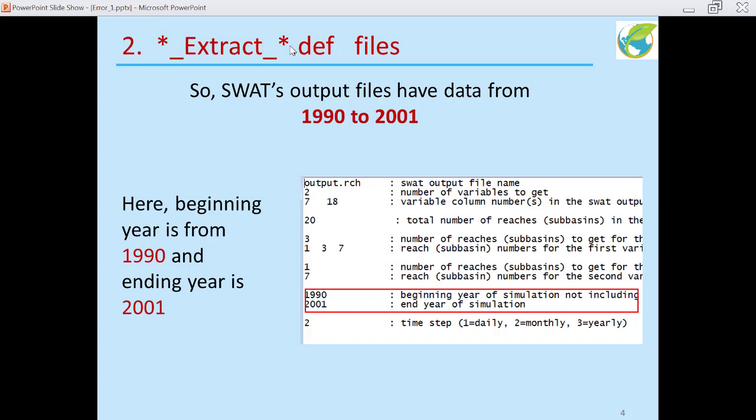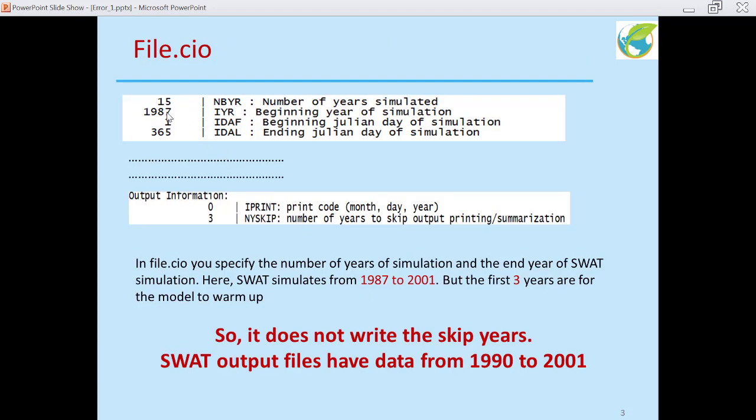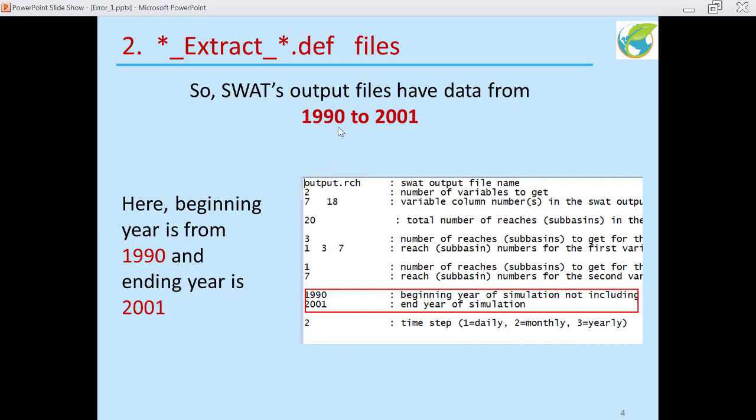So these extract files must have data beginning from 1990 to 2001, not from 1987, which is the year SWAT starts simulating, but the year that SWAT writes output data, which is from 1990 to 2001. So in this file the beginning year of simulation is 1990.